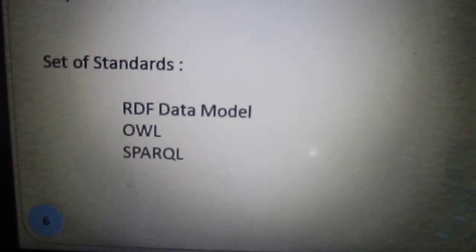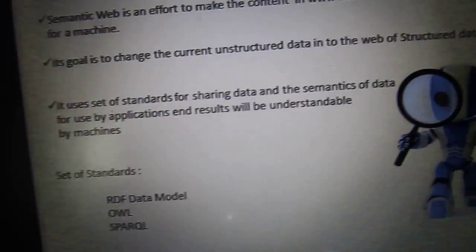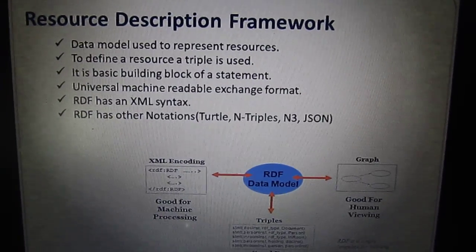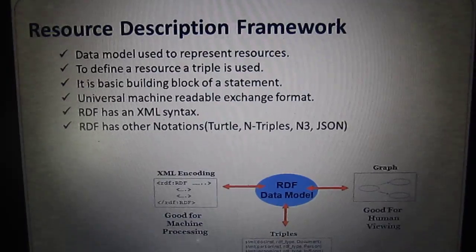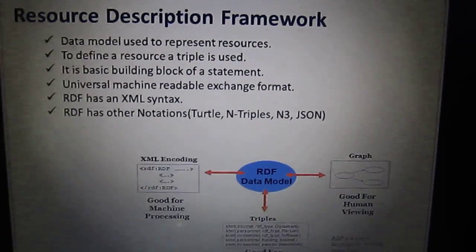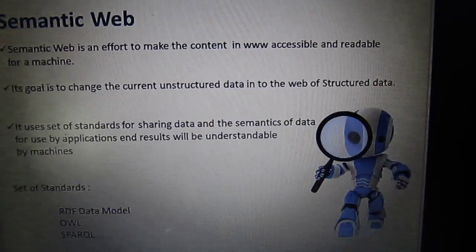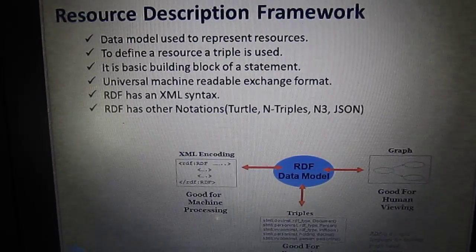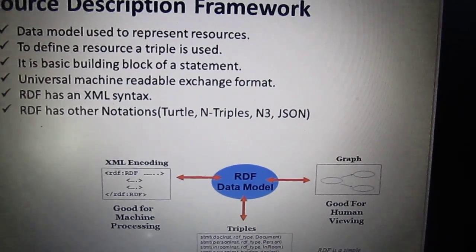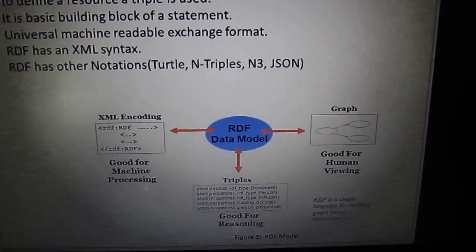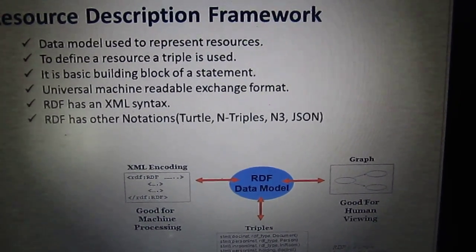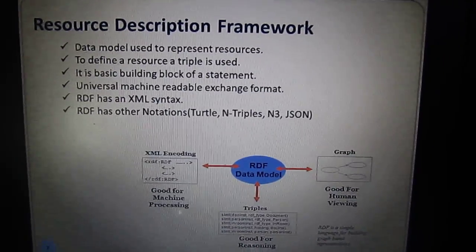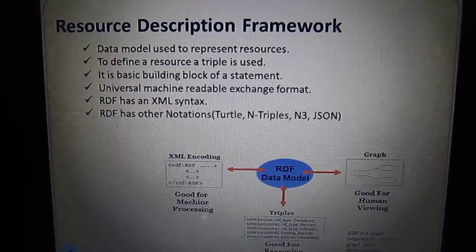The Semantic Web uses three standards: the RDF data model, OWL, and SPARQL. The Resource Description Framework (RDF) is used to represent any resources in the world, like the sun, the moon, the earth, or a computer. It is one of the foundational Semantic Web technologies, the other two being OWL and SPARQL. It is a basic building block of a statement and is universally machine-readable. Basically, RDF is expressed in XML syntax. Different notations of RDF include Turtle, N-Triple, and JSON. To generate RDF using Java, we use the Apache Jena framework; for C++, there are corresponding APIs and libraries like Redland.